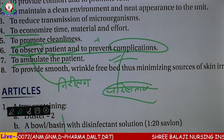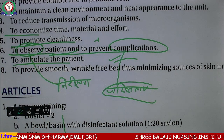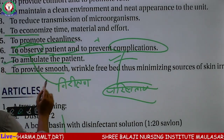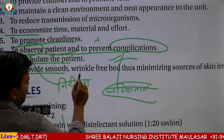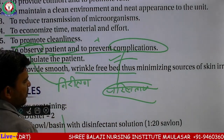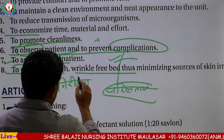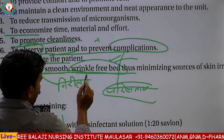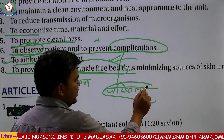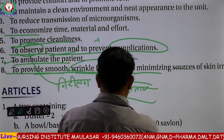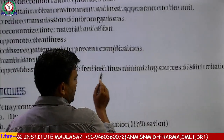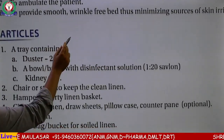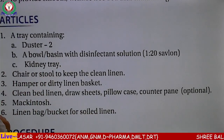To ambulate the patient — patient को ambulate करने के लिए भी bed दे सकते हैं। To provide smooth wrinkle-free bed to minimize source of skin irritation — उसको bed कैसा देना है: smooth, wrinkle-free bed देना है जहां पे कोई wrinkles न हो — minimize source of skin irritation — इसके कारण skin का irritation न हो, इसलिए दिया जाता है।